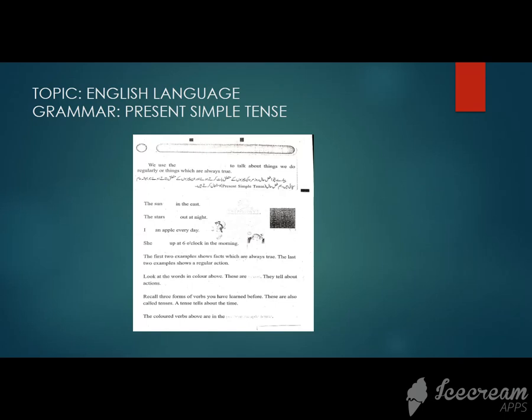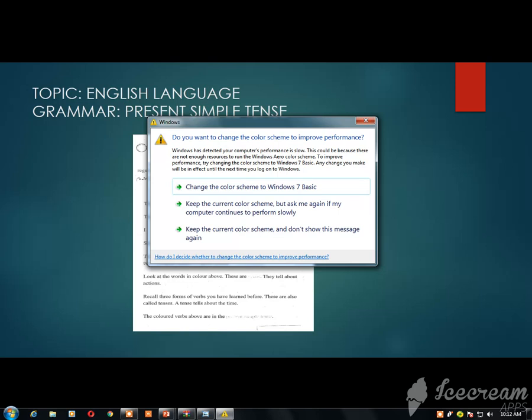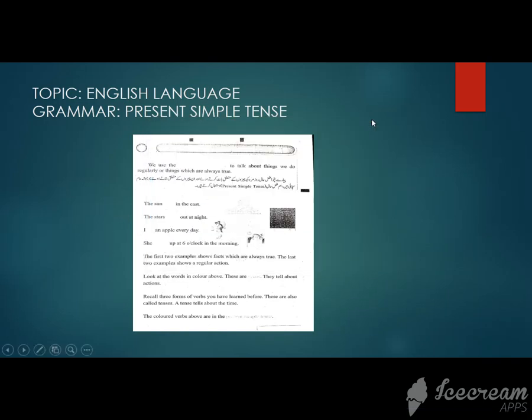What is the basic thing? The sun rises in the east. This is the same thing. This is present simple tense. The stars come out at night. This is called present simple tense.